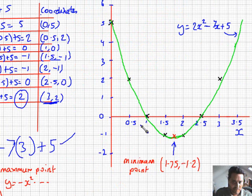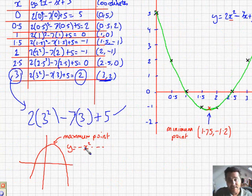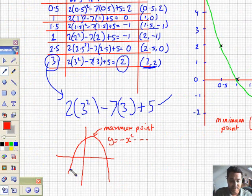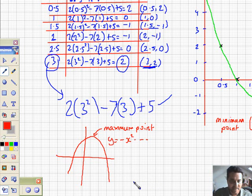So graphs that are of the x squared type, these u's, have a minimum point. Graphs of the minus x squared type, still quadratic, have a peak and therefore have a maximum point. So that's as an aside.